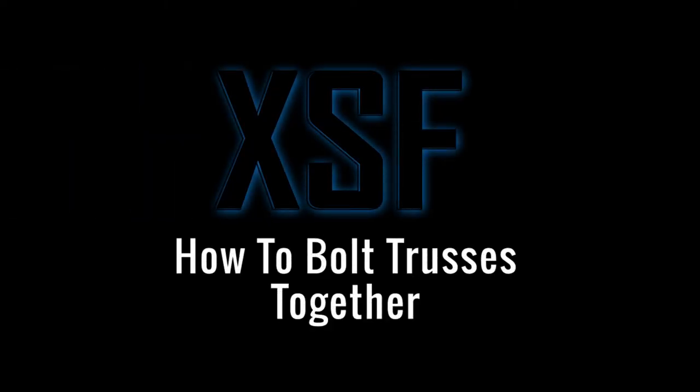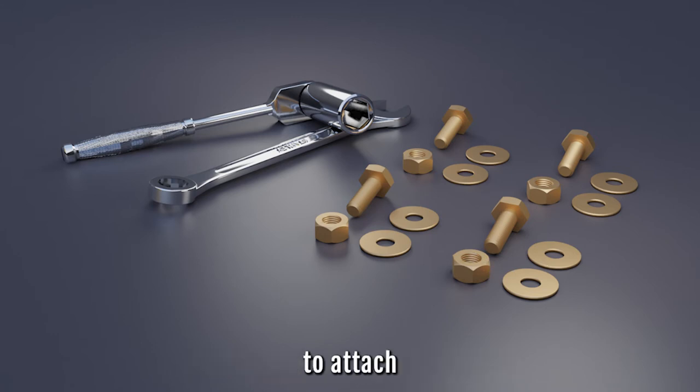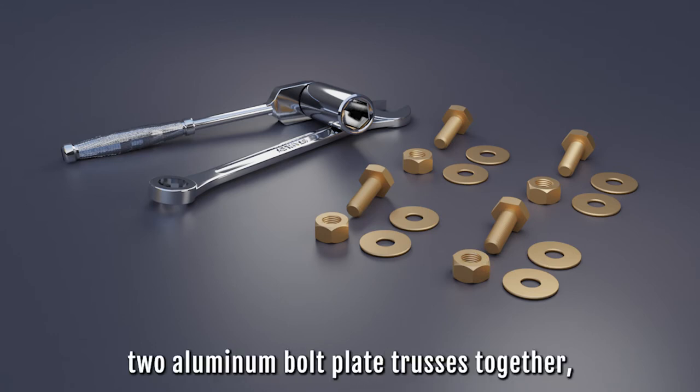How to bolt trusses together. Steel bolts, nuts and washers are typically used to attach two aluminum bolt plate trusses together.